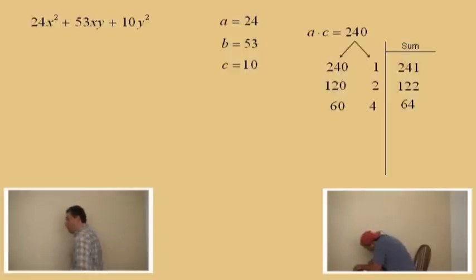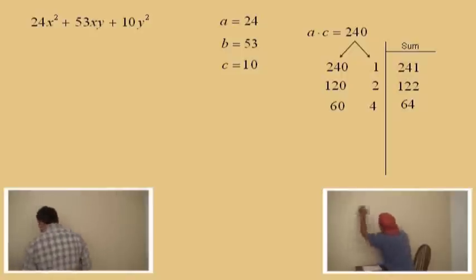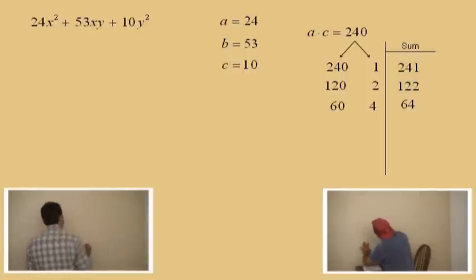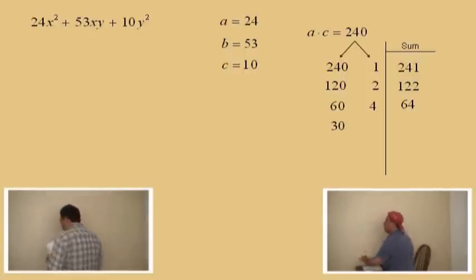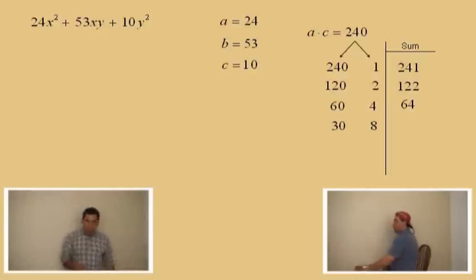We still haven't found that B term yet, have we? Remember, our B term is a 53. Now, Charlie, what's half of 60? 30. That's right. Now 4, double that, you get a what? 8. Now what do those sum to? 38.